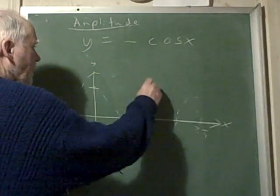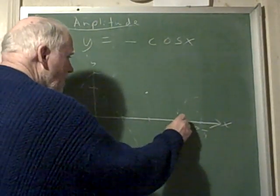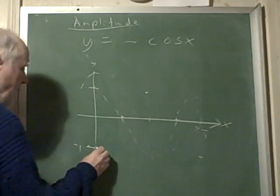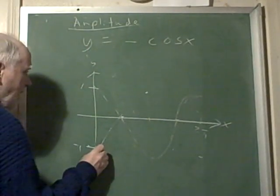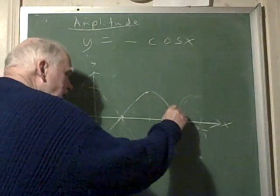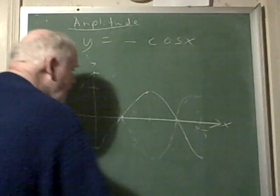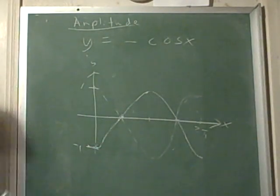But now the whole thing's tipped upside down. So it just kind of goes the opposite way. So a negative cosine wouldn't look like this, but it would look like this upside down. So a negative in front of it tips it upside down.